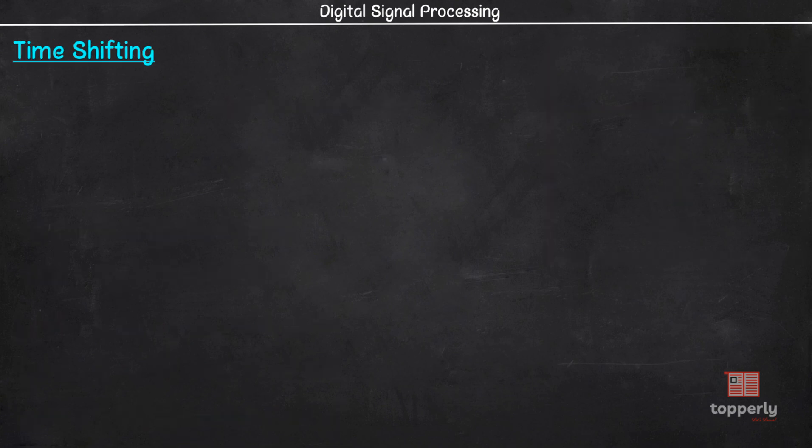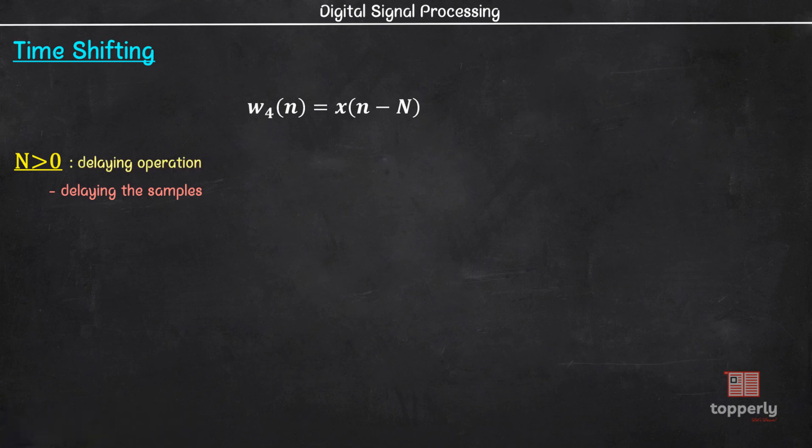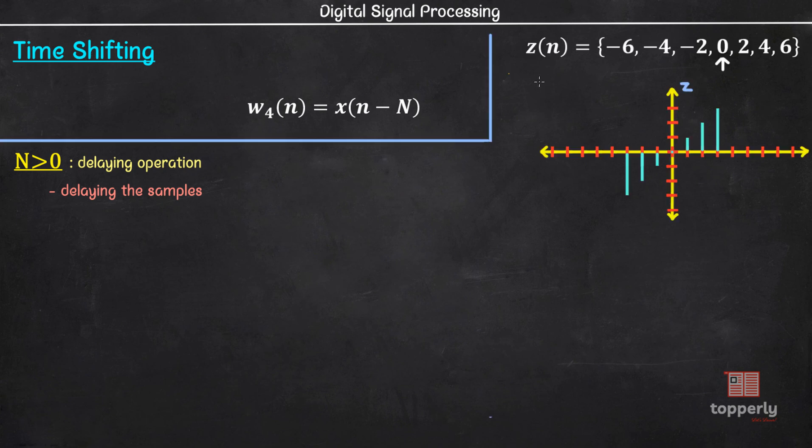Now, the fourth basic operation is time shifting. Time shifting operation, as the name implies, shifts the sequence forward or backward in time. The relation between time shifted version and the original sequence is w4 of n equals x of n minus N, where x is the original sequence and w4 is the time shifted sequence and capital N is an integer. If capital N is greater than 0, then we are delaying the samples and the operation is called delaying operation.